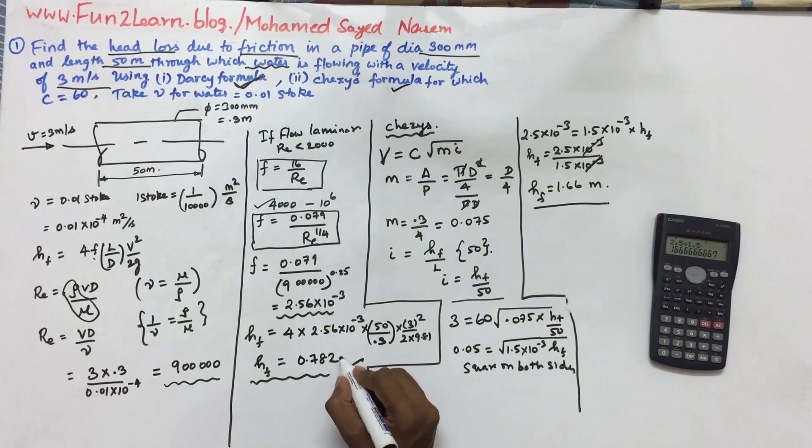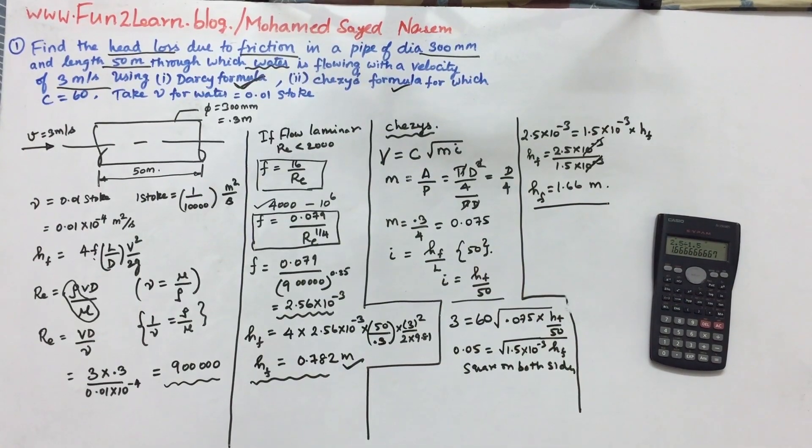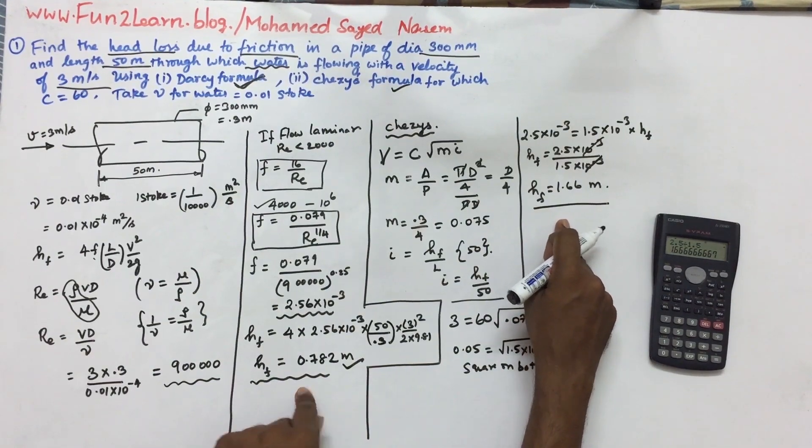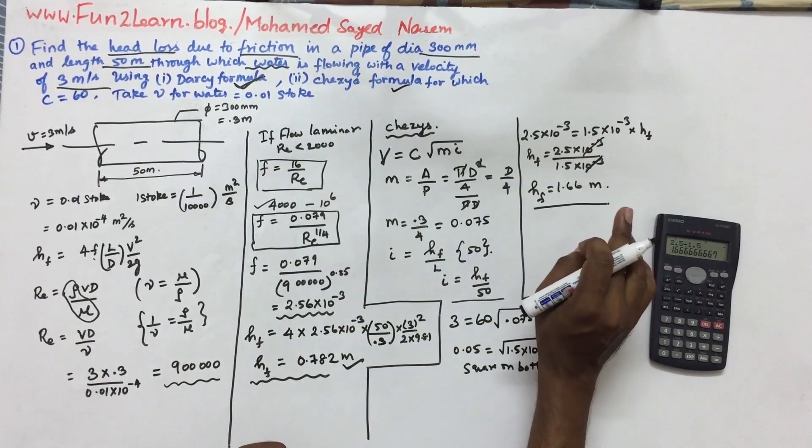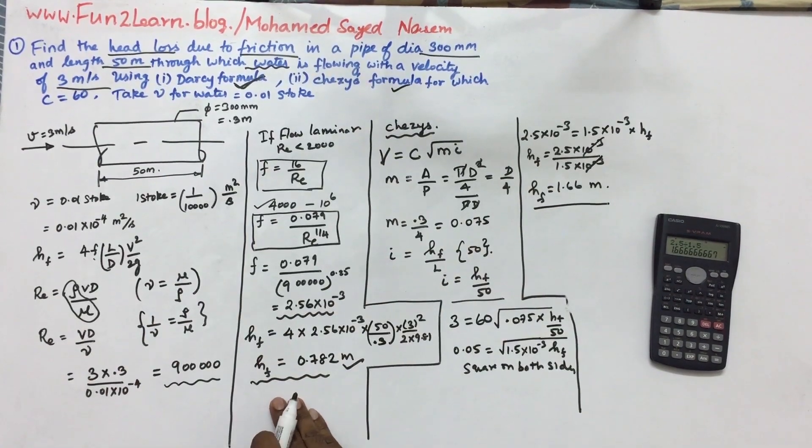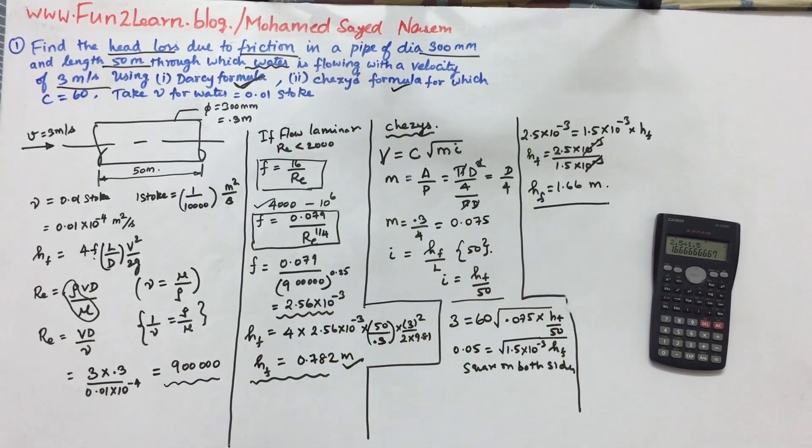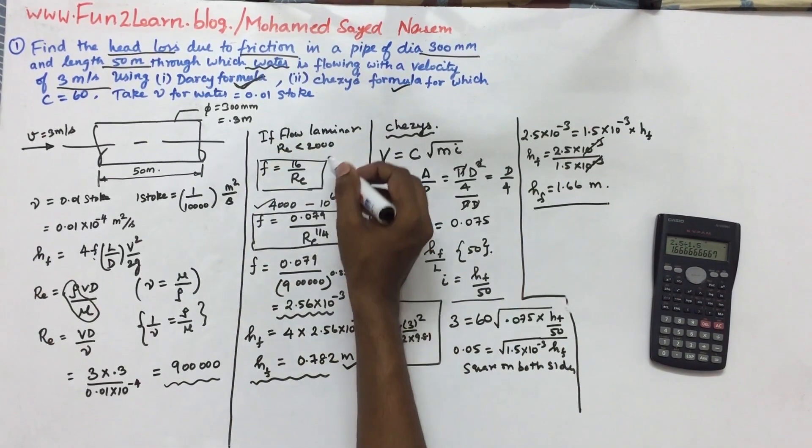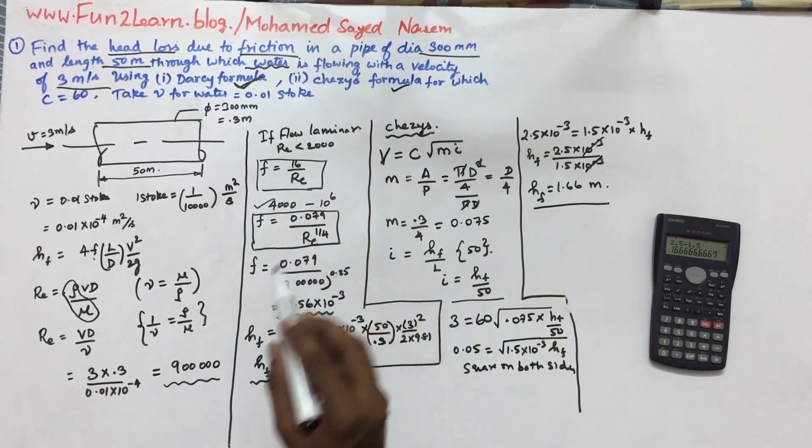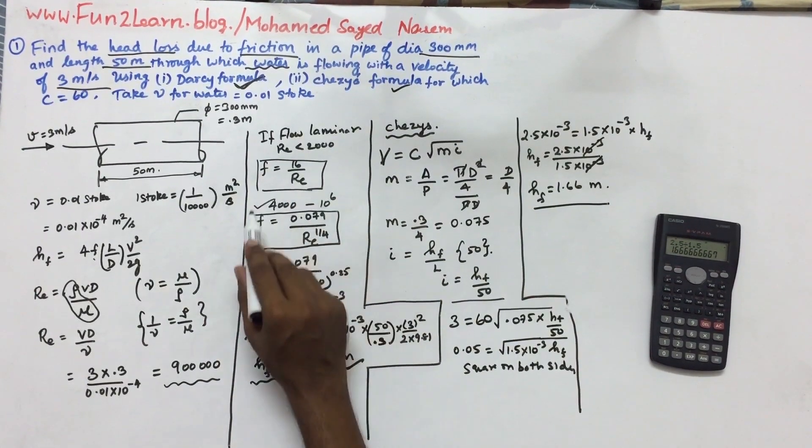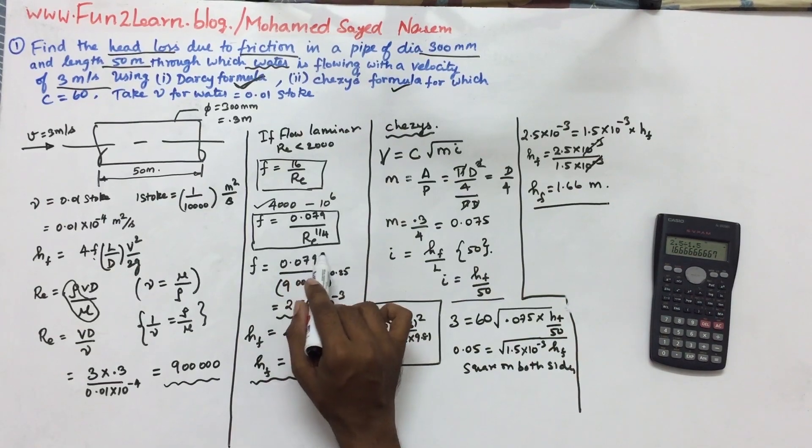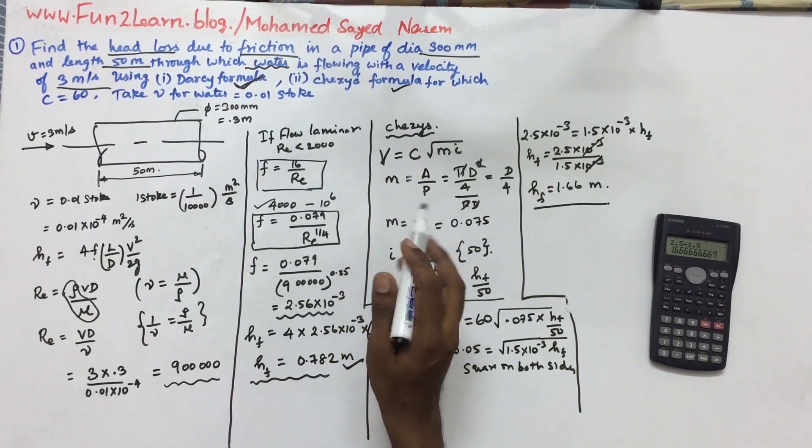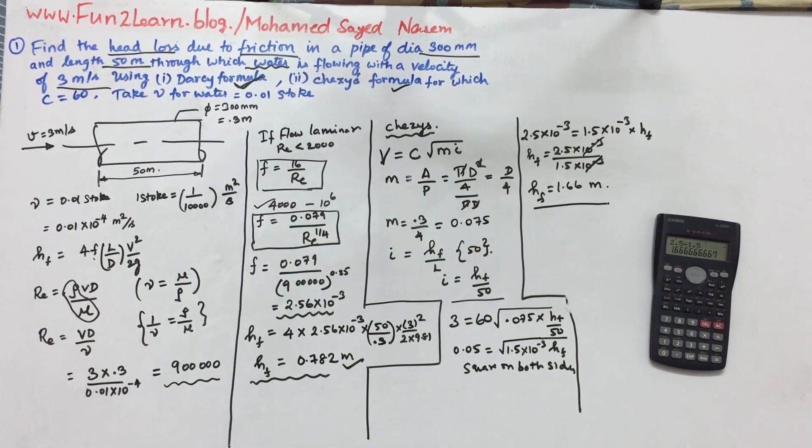Hf value equals 2.5 divided by 1.5, which is 1.66 meters. This is head loss due to friction. The unit of head loss is meters. Using Chezy's formula, if you compare the two friction laws, this is an approximation. Darcy's Weisbach formula uses coefficient of friction. Chezy's formula uses this approach. For laminar range, f value is 16 by RE. For turbulent in this range, it's 0.079 divided by RE power 1 by 4.